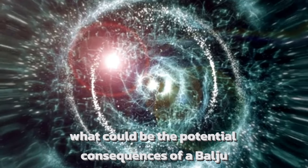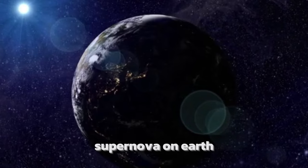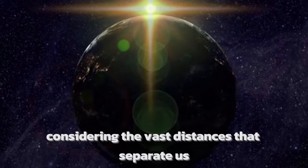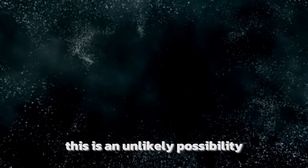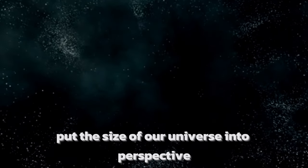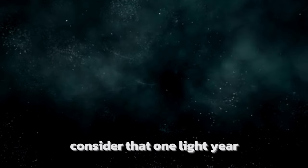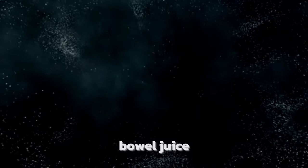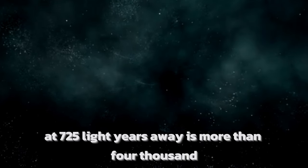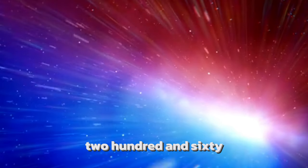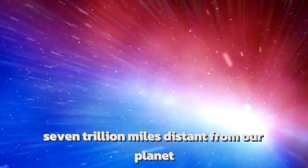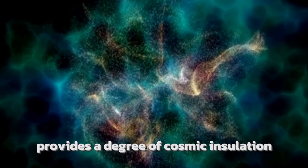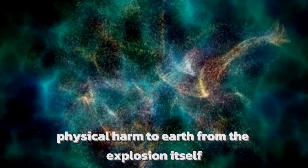But what could be the potential consequences of a Betelgeuse supernova on Earth? Is humanity in danger? Considering the vast distances that separate us, this is an unlikely possibility. To put the size of our universe into perspective, consider that one light-year is roughly 5.88 trillion miles. Betelgeuse, at 725 light-years away, is more than 4,267 trillion miles distant from our planet. This enormous separation provides a degree of cosmic insulation and any direct physical harm to Earth from the explosion itself is extremely unlikely.